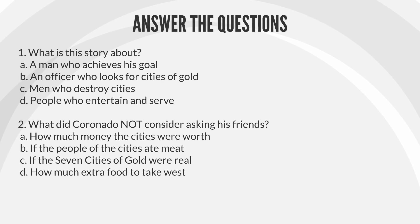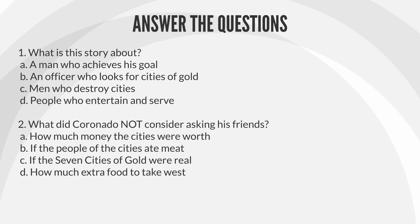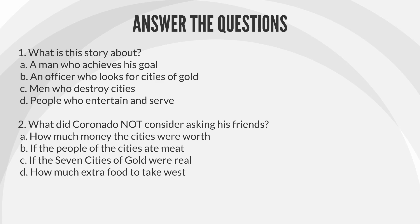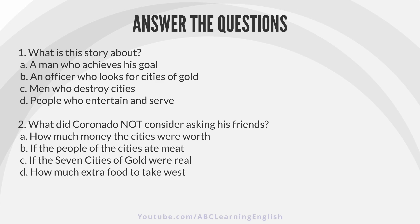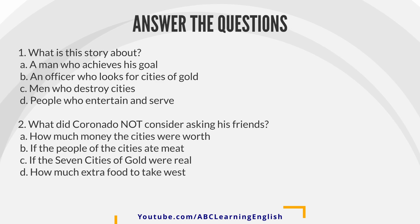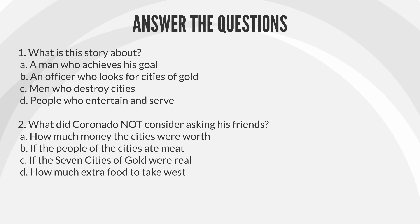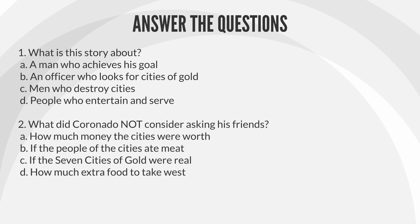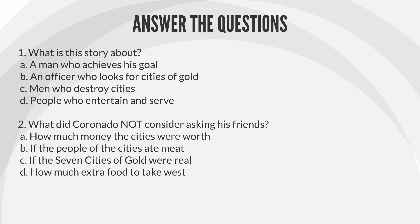2. What did Coronado not consider asking his friends? A. How much money the cities were worth. B. If the people of the cities ate meat. C. If the Seven Cities of Gold were real. D. How much extra food to take west.